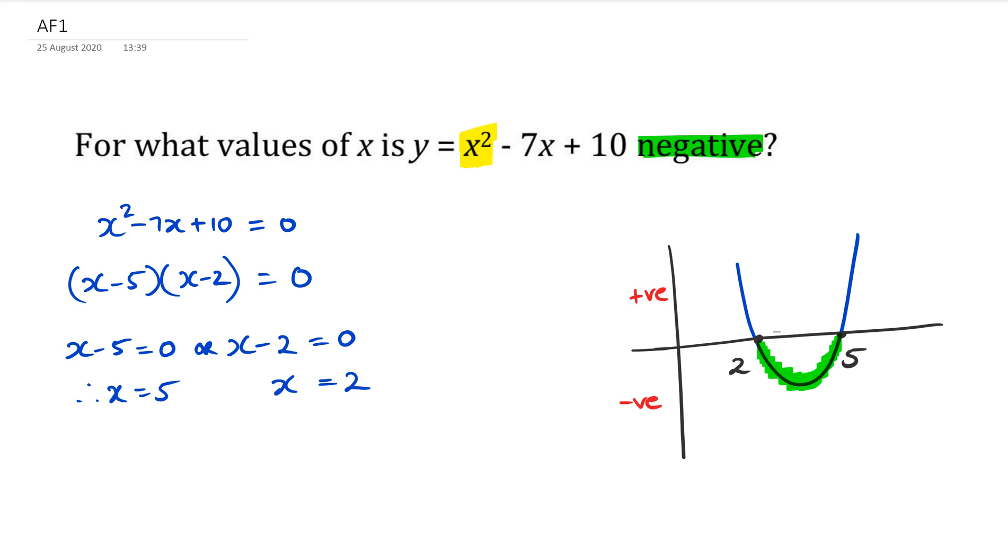Our final answer, we're simply going to write it up like this: x² - 7x + 10 is negative when x is between 2 and 5. The way we write it is we write it down like this: 2 is less than x and x is less than 5.